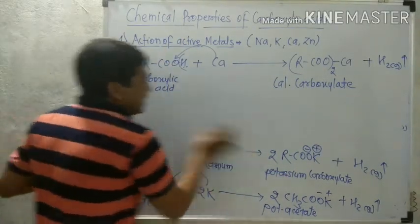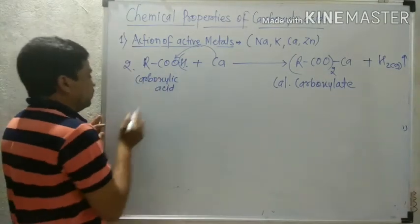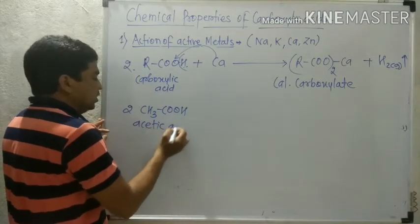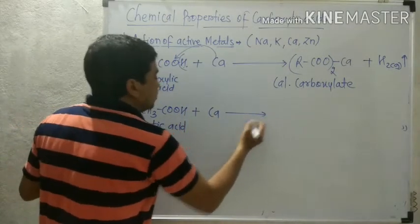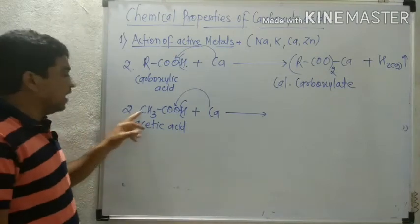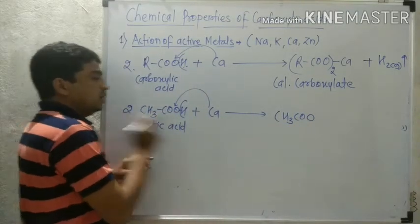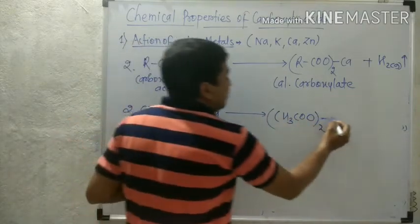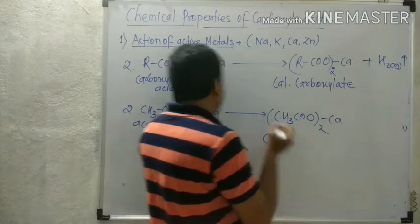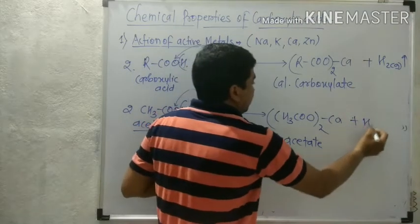For example, two molecules of acetic acid (CH₃COOH) react with one atom of calcium. Calcium replaces the hydrogen atoms from both molecules. We obtain (CH₃COO)₂Ca — calcium in the structure of acetic acid — therefore called calcium acetate, along with hydrogen gas.